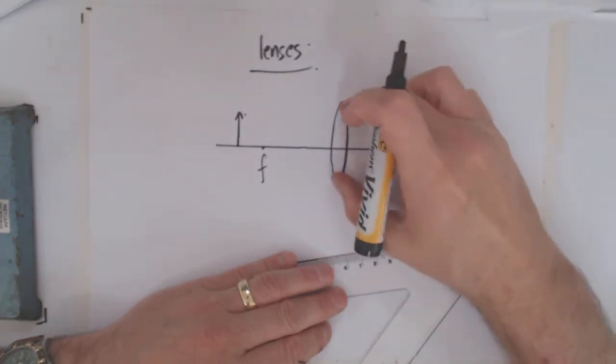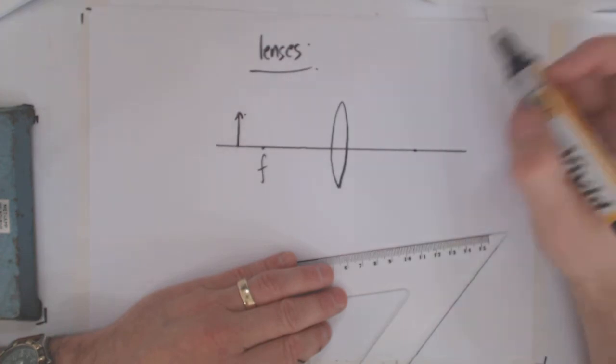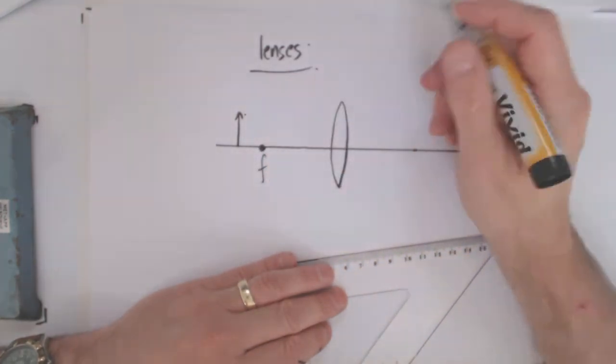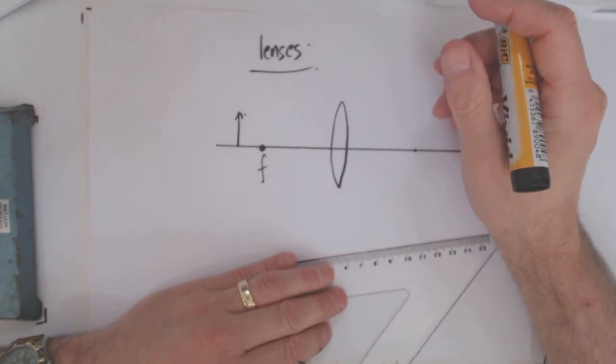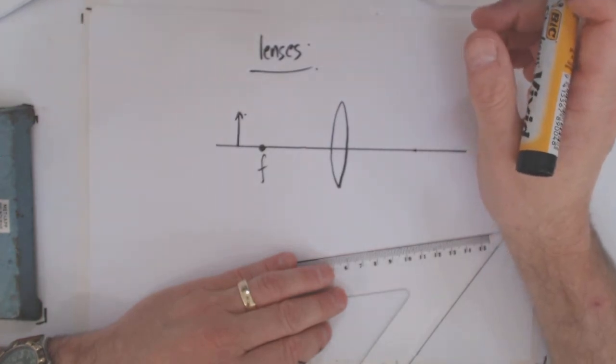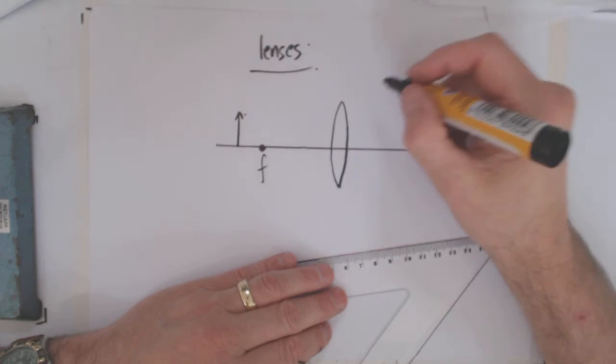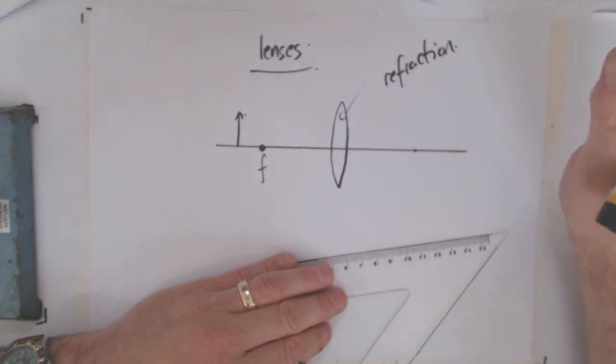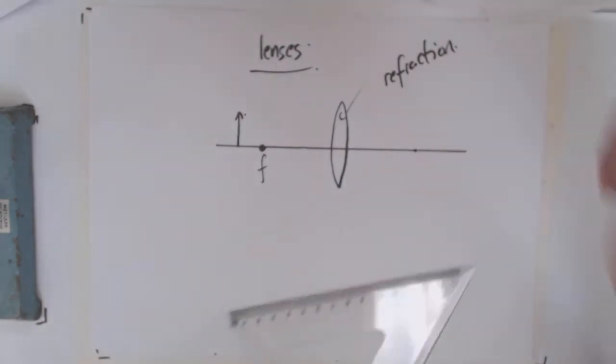But what determines the focal length here is the curvature, right? So it's the curvature that does that. And so what's going on inside this lens is refraction.